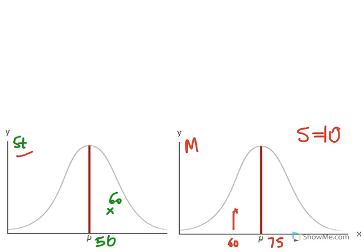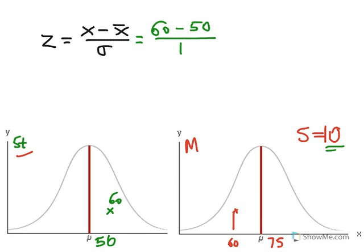So to quantify these two places, we will use the z-score. The z-score formula is equal to the value or the score minus the mean of that distribution, over the standard deviation. So in the statistics test, we place the numbers: x is 60, minus the mean which is 50, over the standard deviation which is 10. That gives us 10 over 10, which equals plus 1.00. So that is one standard deviation above the mean.